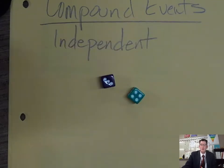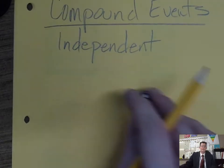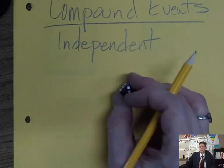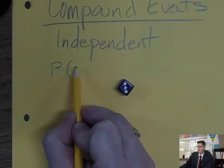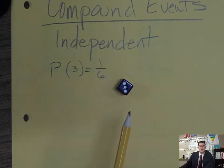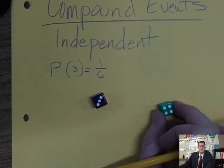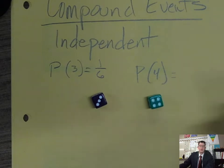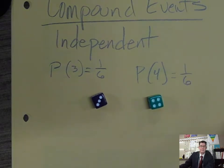When you have multiple events going on — for example, I've got two dice. With one die, what's the probability that I'm going to roll a three? Well, the probability of rolling a three is one out of six, because there's one three on the die. And what about rolling a four? Rolling a four is also one out of six.